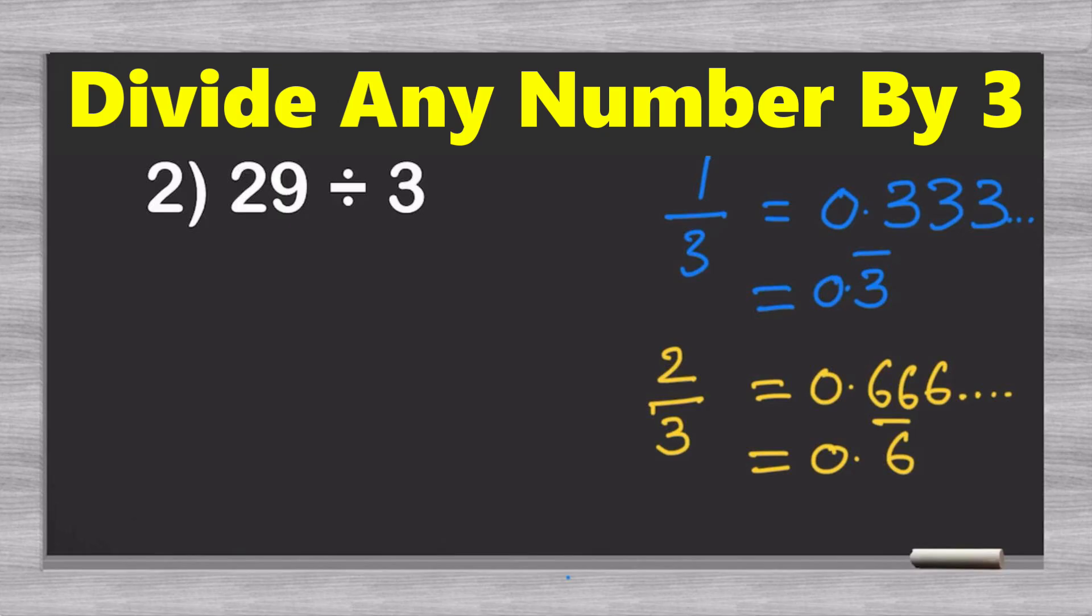Now, the first thing that we have to do is find the closest multiple of 3 without going over 29. And in this case, that number is 27. And so, all we have to do is repurpose 29 as 27 plus 2. This is just a renaming of the original fraction. It's the same thing. But now, we have the extra benefit that all we have to do is just divide. So, that's exactly what we're going to be doing here. First, we have 27 divided by 3, which we already know is 9.